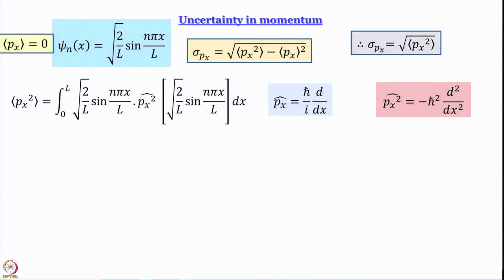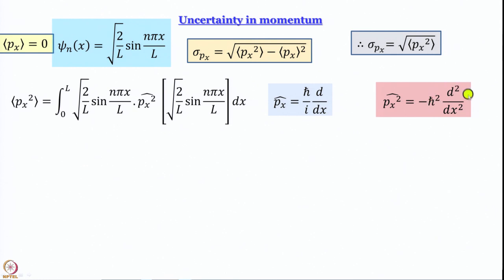Making p_x act twice gives (ℏ/i)·(ℏ/i) = −ℏ², and d/dx operated twice gives d²/dx². So p_x² operator is −ℏ²·d²/dx². This should ring a bell: when we discussed the Schrödinger equation, the Hamiltonian's kinetic energy operator was −ℏ²/(2m)·d²/dx², because kinetic energy is p_x²/(2m). All our discussion is in sync.